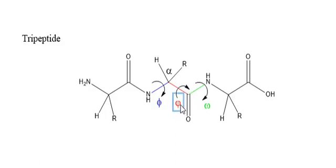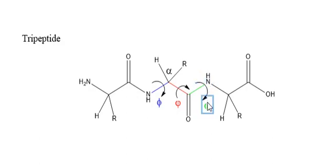The psi angle is the angle between the alpha carbon and the peptide carbonyl carbon. The omega angle is the angle between the peptide carbonyl carbon and nitrogen.